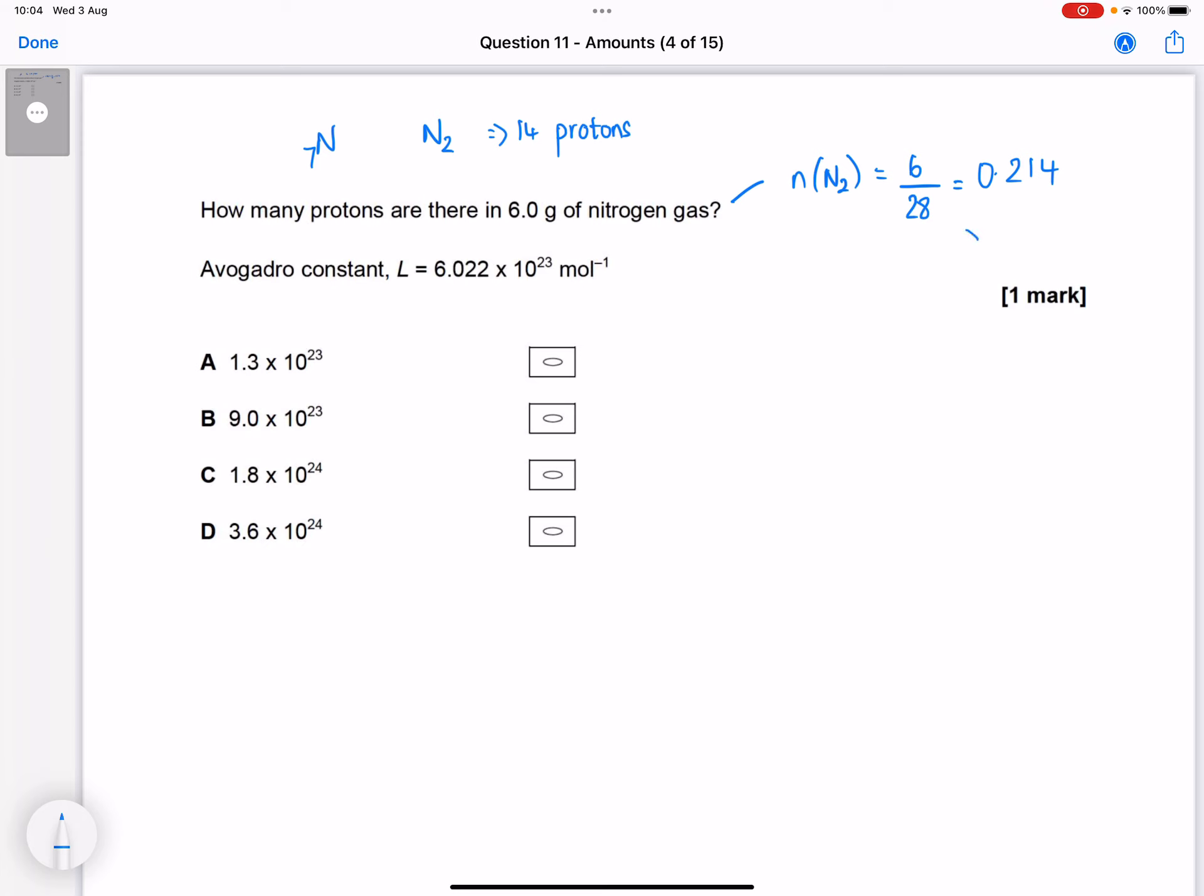We would need to multiply this by 14 to find out how many moles of protons we have. So that would be 3 moles of protons.